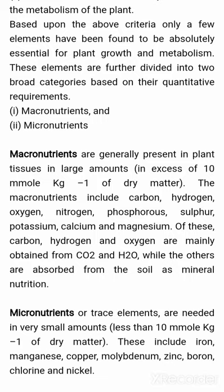Macronutrients are generally present in plant tissues in large amounts, in excess of 10 mmol per kg of dry matter. The macronutrients include carbon, hydrogen, oxygen, nitrogen, phosphorus, sulfur, potassium, calcium and magnesium. Of these, carbon, hydrogen and oxygen are mainly obtained from CO₂ and H₂O, while the others are absorbed from the soil as mineral nutrition.